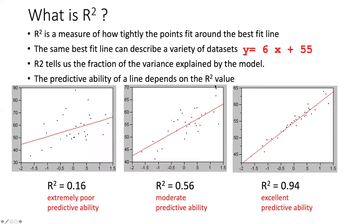R-squared is a measure of how tightly points fit around the best-fit line. Here we see some best-fit lines through sets of points.